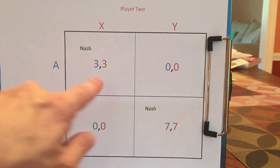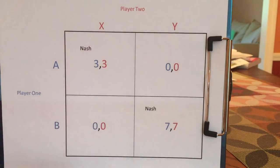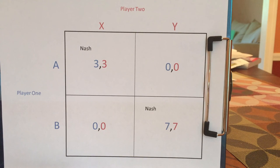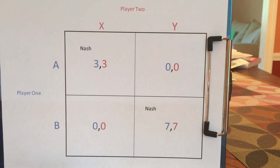So player one, if they end up at AX, would say: I have no control over player two. Player two picked X — there's nothing I could have done that could possibly have changed that. That's fixed and unalterable. Given that player two picked X, I don't regret playing A. A worked out pretty well for me.